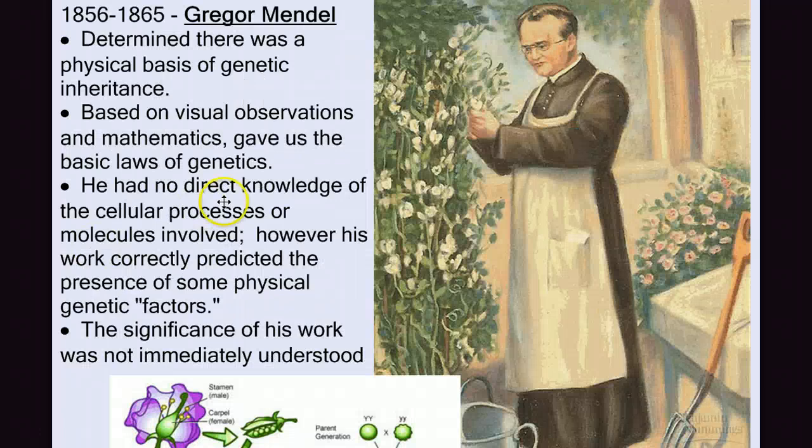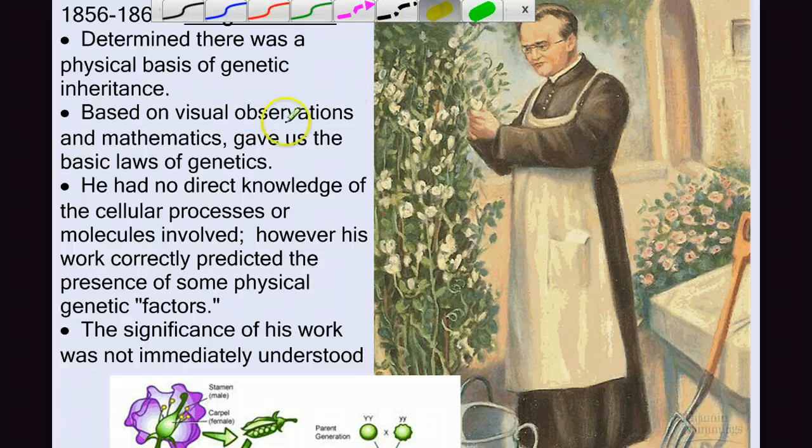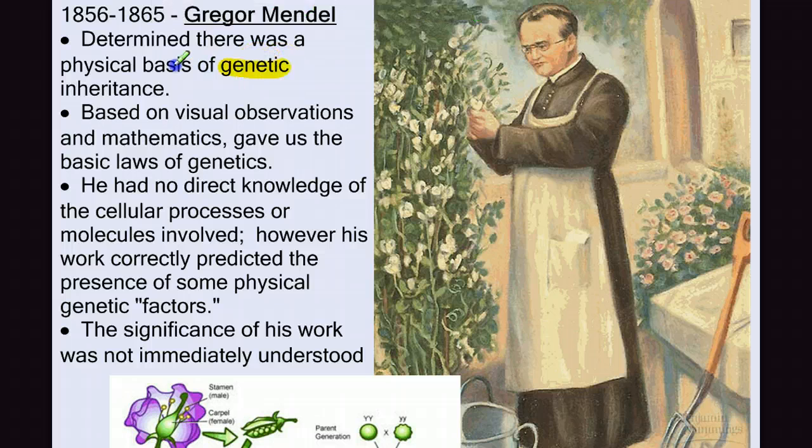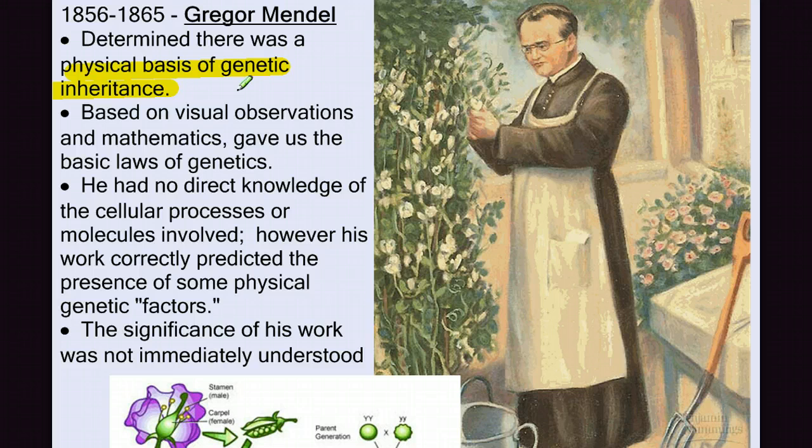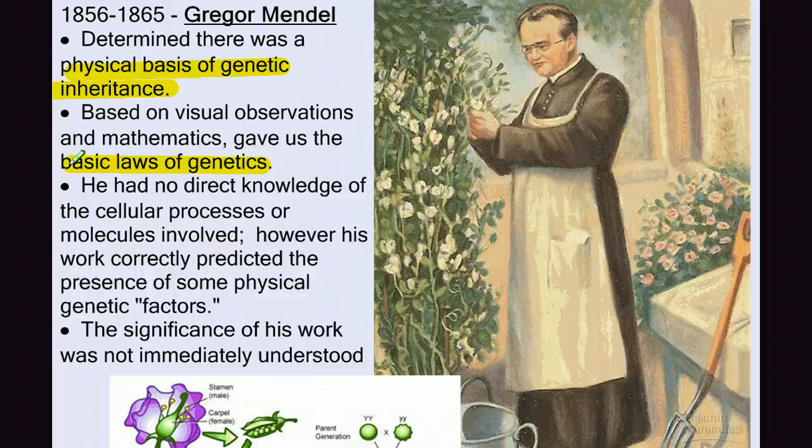We'll start with Gregor Mendel, an Austrian monk who, working for many years with thousands of pea plants, determined that there was a physical basis of genetic inheritance. Based only on his detailed observations and mathematical analysis, he gave us the basic laws of genetics. What's interesting is, he had no direct knowledge of DNA, chromosomes, or genes, yet his work correctly predicted their existence. However, the significance of his work was not immediately recognized.